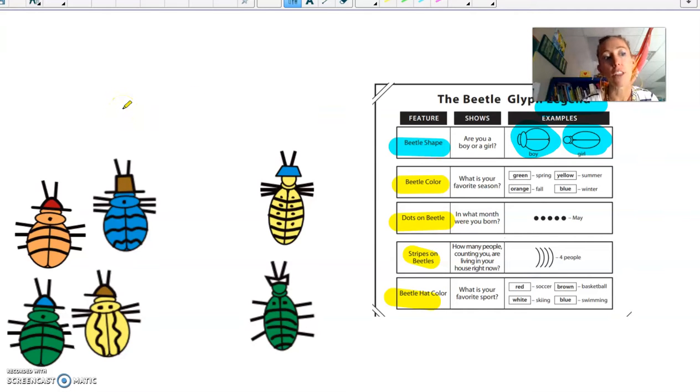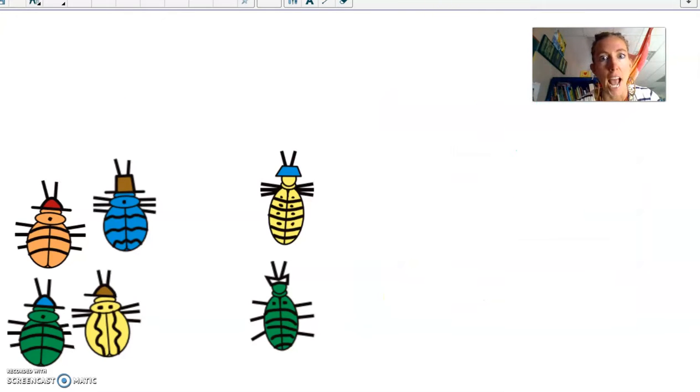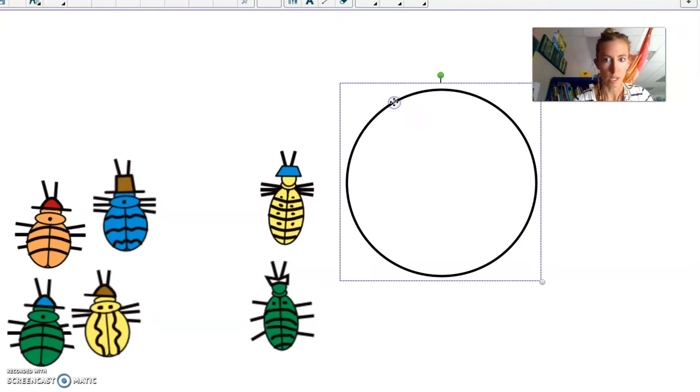Let's check out another something that we could do with these beetles. Let's get rid of this legend and let's bring into play a circle. What are we doing? Well, let's see. We're gonna organize these beetles a different way. I'm gonna make two of these circles.